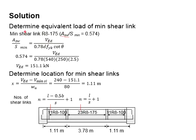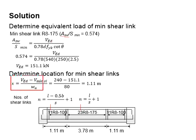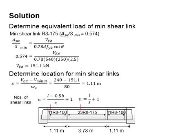Here you need to determine the equivalent shear force due to the minimum shear link by using the shear link equation, keeping the shear load as an unknown. You will find 151.1 kilonewton as the equivalent load for the minimum shear link. Using the appropriate equation to locate the position of that minimum equivalent shear link load, it is found to be located at 1.11 meters from the beam end.